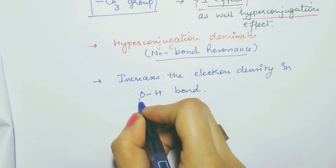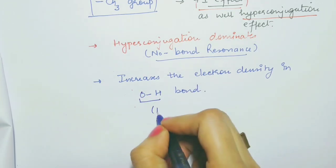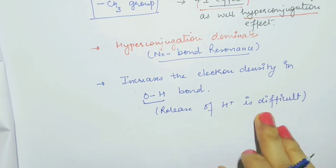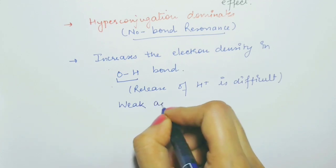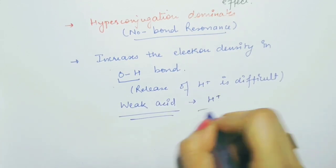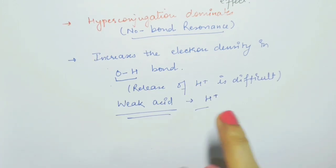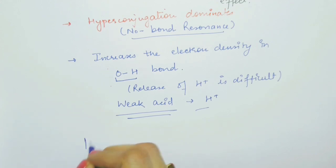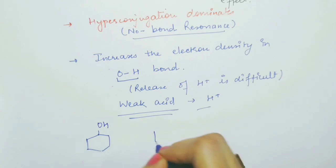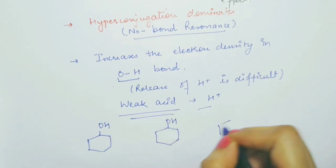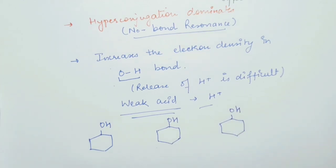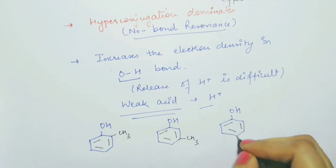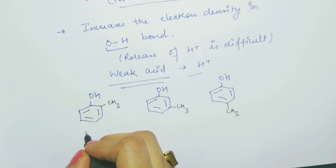Both effects — the +I effect and hyperconjugation — increase the electron density in the O-H bond. If electron density is increased on the O-H bond, then release of H⁺ is difficult. If release of H⁺ is difficult, that means it becomes a weak acid, because an acid is that which donates H⁺. So if this release is difficult, it becomes a weaker acid.